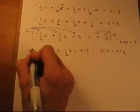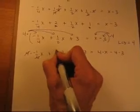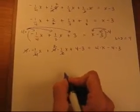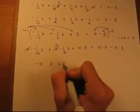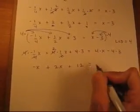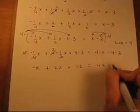And now we can cancel. 4 into 4 is gone. 2 into 4 leaves a 2. Rewriting, we get minus x plus 2x plus 12 equals 4x take away 12.